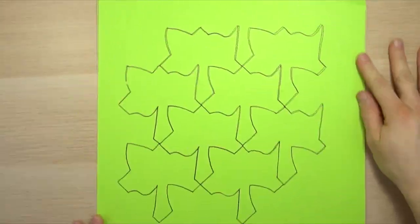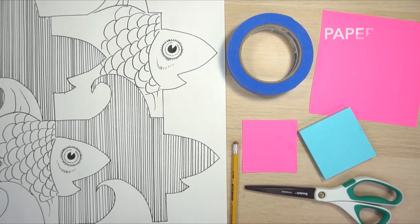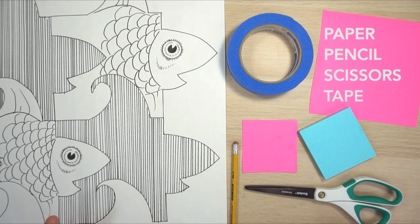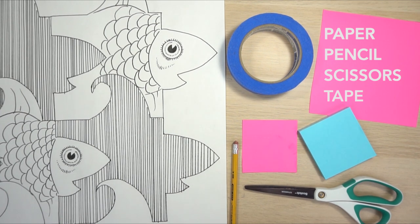The supplies you need for a tessellation are paper, a pencil, scissors, tape, and then another piece of paper to draw your tessellation onto. Then you can design it and color it in with whatever you want, with markers, colored pencils, watercolor.